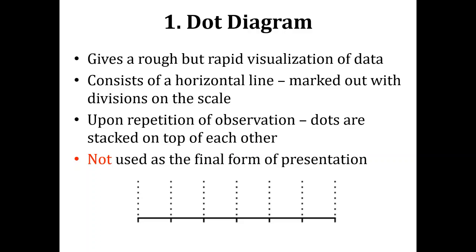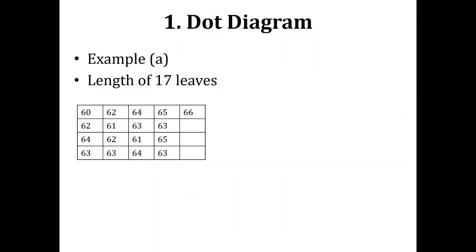You use a dot diagram when you want to quickly see the trends in your data. This dot diagram is not used as the final form of presentation — it is more of rough work that you use during taking observations or deducing some initial results.